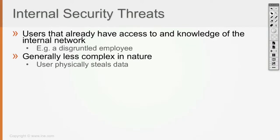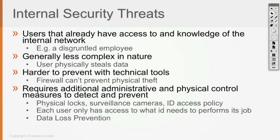Internal threats are generally less complex because once you have physical access to the network, if not enough countermeasures are deployed, it's easier for the attacker to get their hands on data compared to launching a remote attack from the internet — where the attacker has to bypass many security measures. It's also harder to prevent with technical tools, since a firewall, for example, cannot prevent a physical theft.